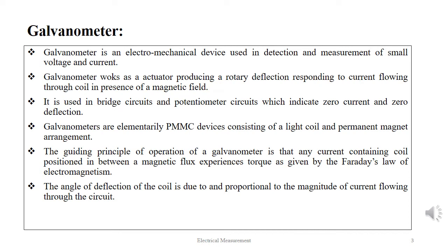A galvanometer is an electromechanical device used in detection and measurement of small voltage and current. It works as an actuator producing a rotary deflection responding to current flowing through a coil in the presence of a magnetic field. It is used in bridge circuits and potentiometer circuits and indicates zero current and zero deflection.